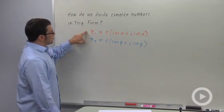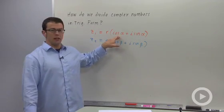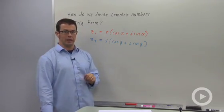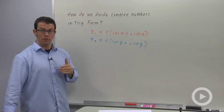Here are two general complex numbers. Z1 equals R times cosine alpha plus I sine alpha, and Z2 equals S times cosine beta plus I sine beta. I'm going to divide these two and come up with a formula.